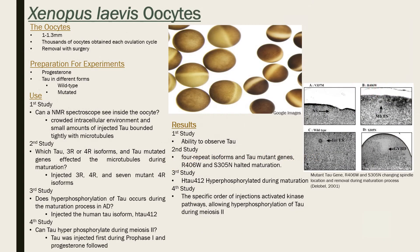The oocyte size is between 1 to 1.3 millimeters. About a thousand oocytes can be obtained, and a simple surgery can physically remove them. Progesterone was injected into the oocyte to start the maturation process. Since tau is not naturally present in this model, it is also injected.